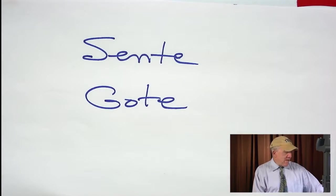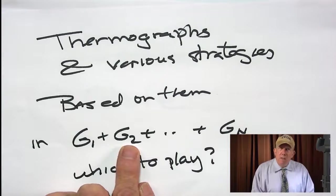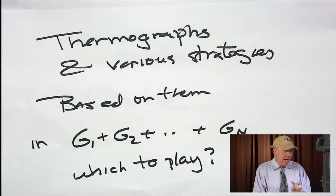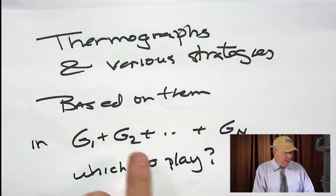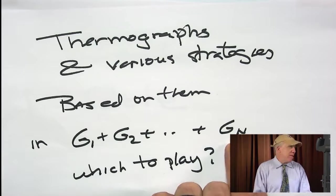So in sente, you play for instance in G2, your opponent is asked to respond there immediately, and then gote, maybe you play in G2, and he says, ah, no problem, I'll play in G5 over here.